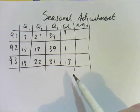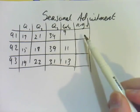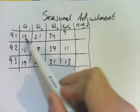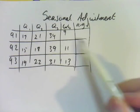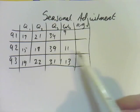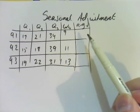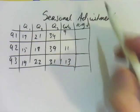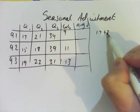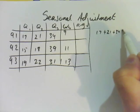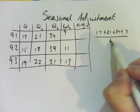The first thing you need to do is work out the average for the year. So I need to work out the average across the year 1991, then across 1992, and across 1993. Just to remind you how to do it, I'm going to do 17 plus 21 plus 34 plus 9 and then divide that by 4.